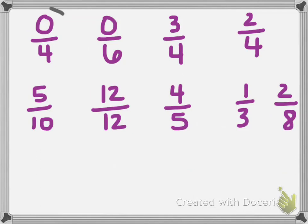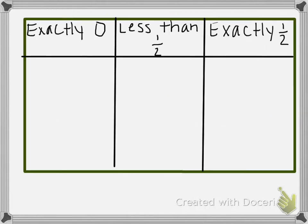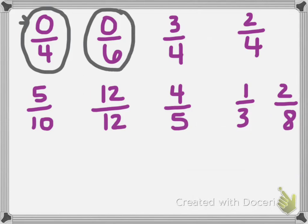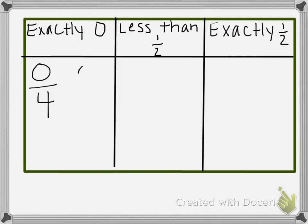If we look at our first fraction, 0 fourths — if I have 0 parts of something, it doesn't matter how many parts my whole is divided into. If I have 0, then that fraction is equal to exactly 0. So we're going to fill in 0 fourths on our chart. Our next one is 0 sixths — we have 0 parts, so that fraction is also equal to 0. If the numerator is 0, we don't have anything, regardless of the denominator.